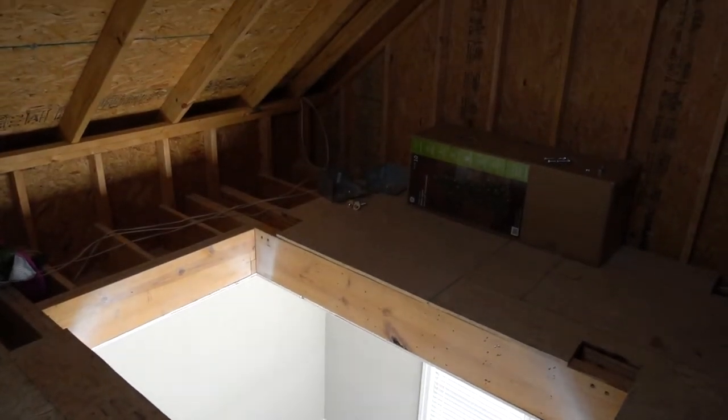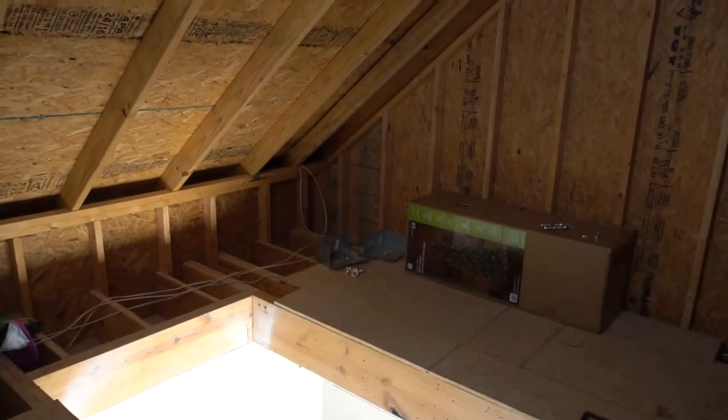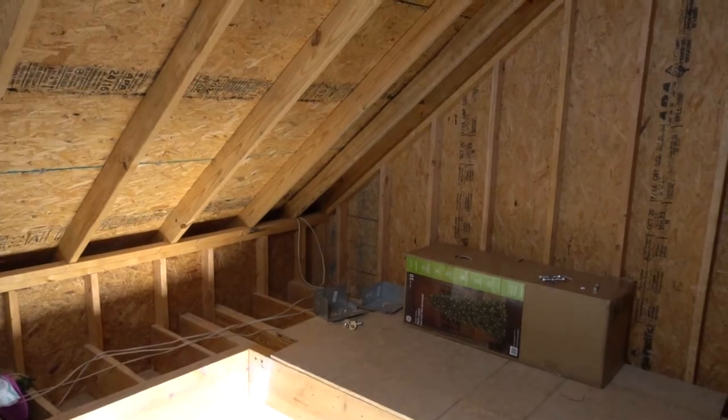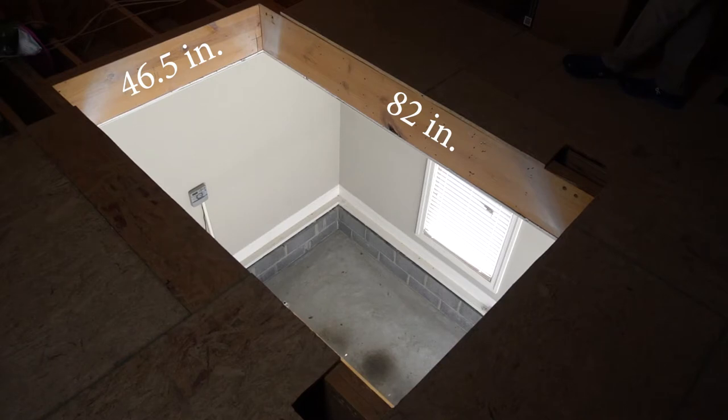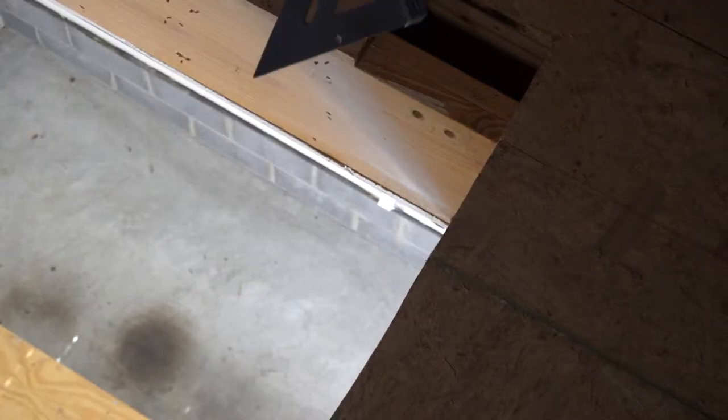Have an electrician or plumber reroute any wires or plumbing from lift location. Have a licensed framer create the opening in your attic floor. The exact inside measurements should be 82 inches long and 46.5 inches wide. Make sure the opening is perfectly square.